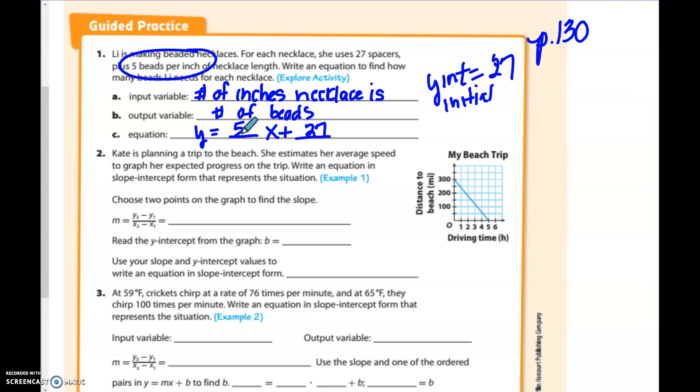Question number two. Kate is planning a trip to the beach. She estimates her average speed to graph her expected progress on the trip. Write an equation in slope-intercept form that represents the situation. So in here, we need to find two points in order to graph this. Well, I am actually going to use this point right here, and I'm going to use this point right here.